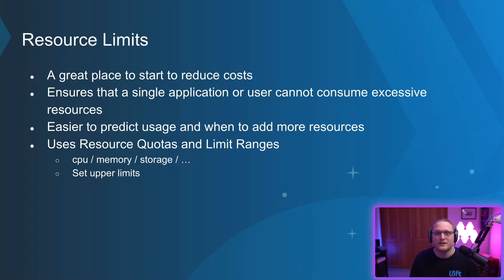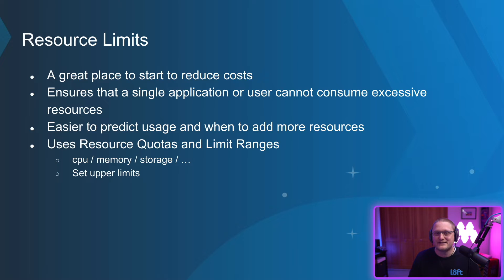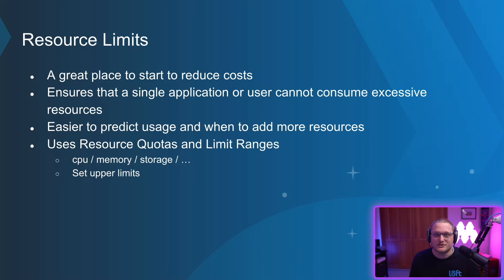Resource limits are a great place to start reducing costs. You can ensure that a single application or user cannot use excessive resources. So that user who says give me 512 gigs for this pod — they may not be able to get it now, because your upper limit might be 32 or 16. Make them justify what they're actually going to be doing, and give them limits that are within what you can afford or what's actually on the cluster. Your cluster may only have VMs that are 128 gigs of memory, or even smaller if you're trying to pack more workloads on there. It's easier to predict usage when you do limits, because you can say each team only gets a specific amount. You can use resource quotas and limit ranges to set how much CPU, memory, or storage they can use, and then set upper limits so someone doesn't ask for 512 gigs when they really don't need it.